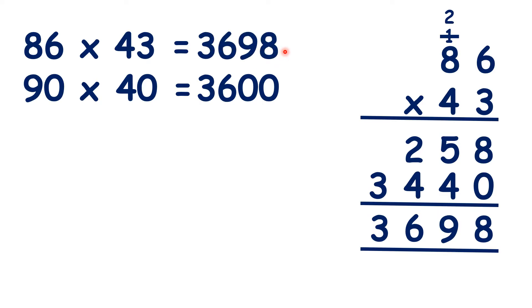That's close to our estimation, so we can be fairly sure we've got the right answer. It's useful to estimate first, because imagine if we had forgotten that we need this zero in the units. We would be adding 258 and 344. So, when we got our answer, we would realize that it wasn't close to 3,600, so we would know we had made a mistake.